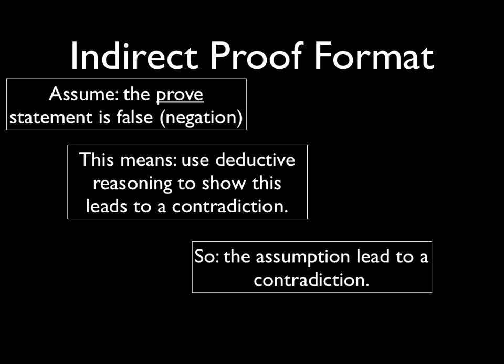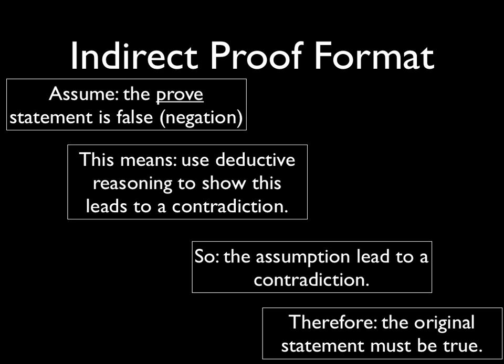Then we point out the contradiction and say, if there was a contradiction, that means our original assumption was false, so therefore that original statement must be true.